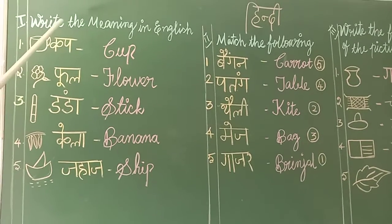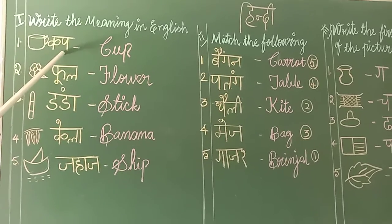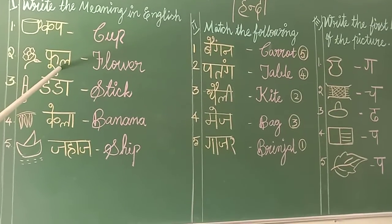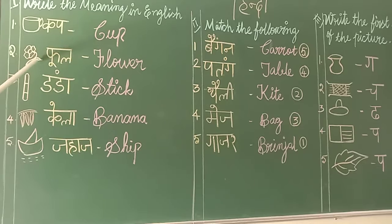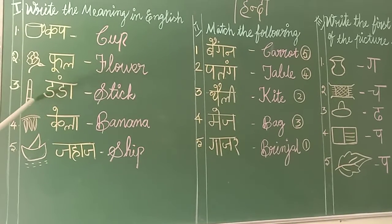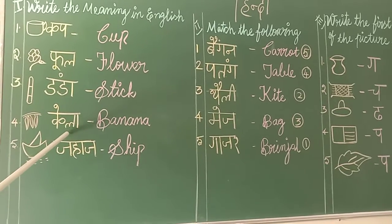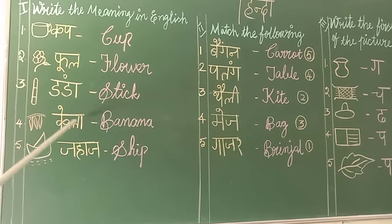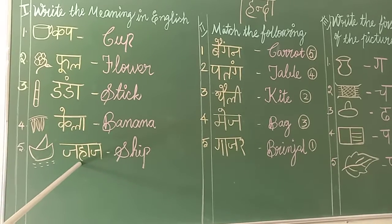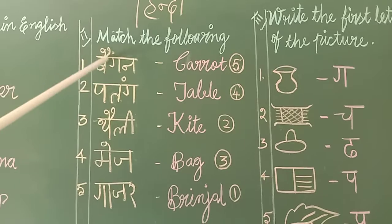First of all, write the meaning in English. Cup - Cup, Fool - Flower, Danda - Stick, Kela - Banana, Jahaj - Ship.